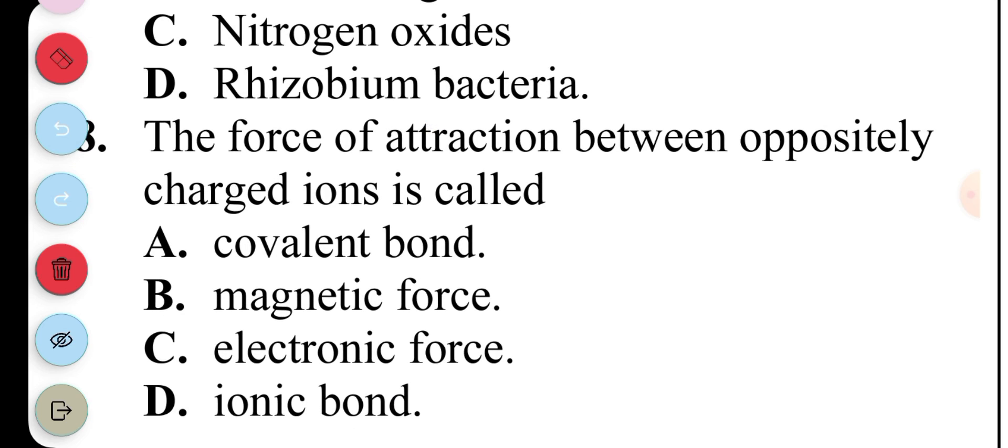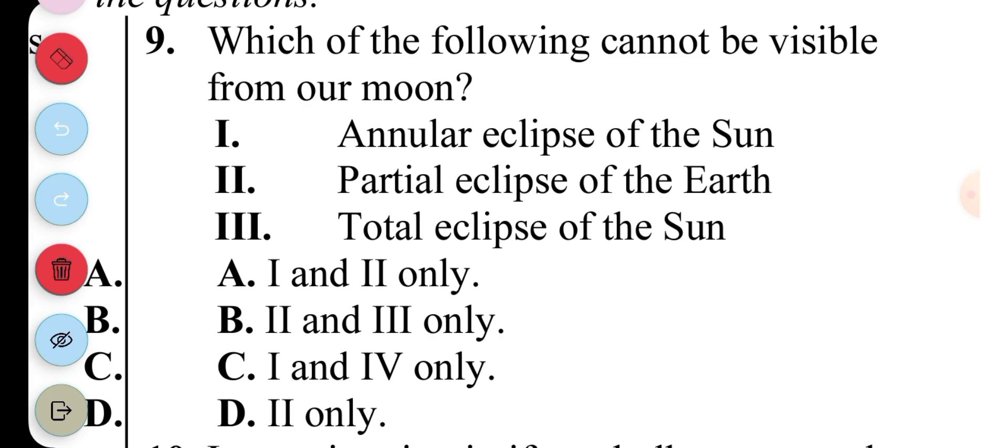Question 8: The force of attraction between oppositely charged ions is called A. Covalent bond, B. Magnetic force, C. Electronic force, D. Ionic bond. The answer to question 8 is D. Question 9: Which of the following cannot be visible from our moon? There's only partial eclipse of the earth that cannot be viewed from the moon. So the answer to question 9 is D.